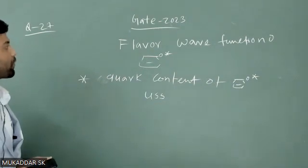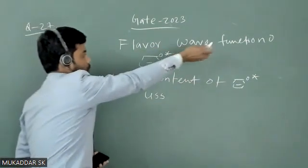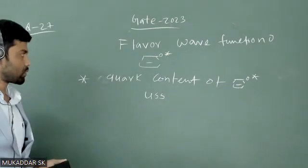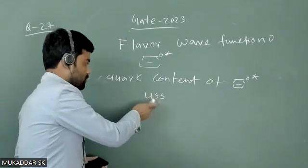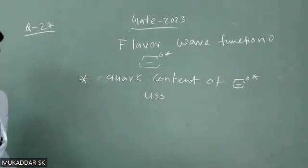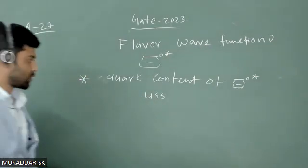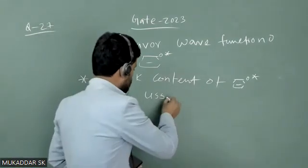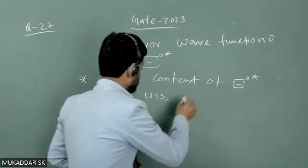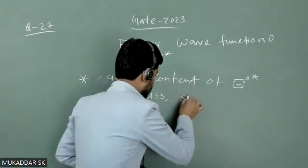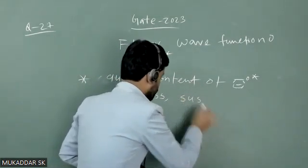Now to find that flavor wave function, we have to take all possible permutations of this uss. The possible permutations will be uss, then sus, and ssu.